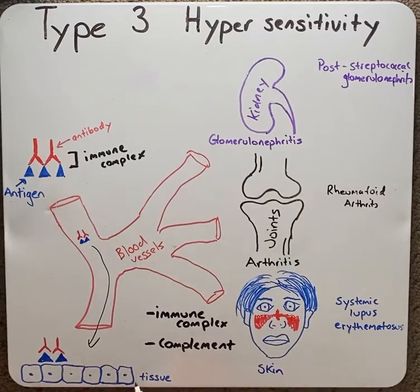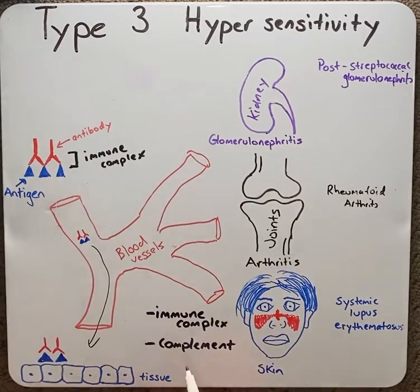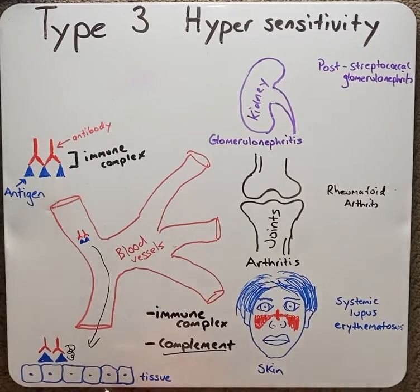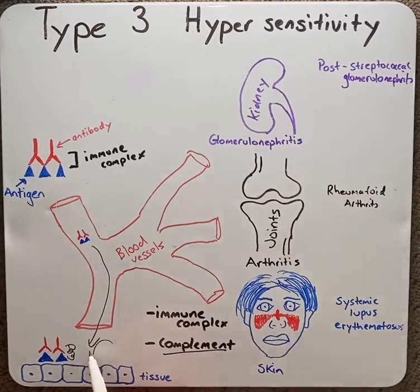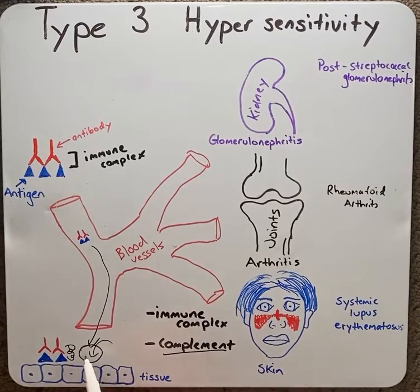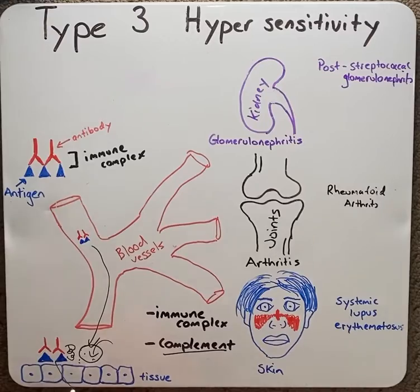An example here in the tissue bed: when the immune complex forms, it brings in complement proteins which bind to the complex, and then brings in neutrophils or macrophages, which then release their lysozymes, causing inflammation and destruction to tissue.